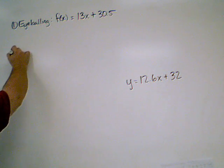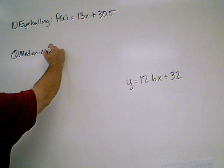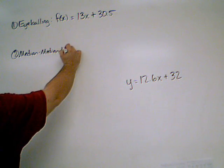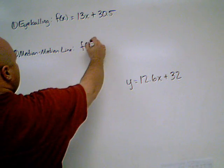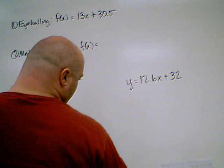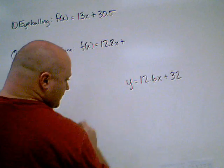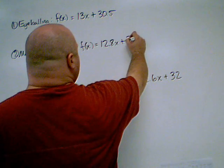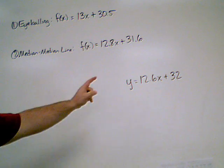The second one, which was the median median line. Again, I'm using f of x. That equation was 12.8x plus 31.6.